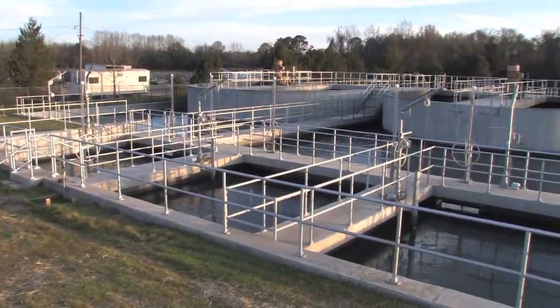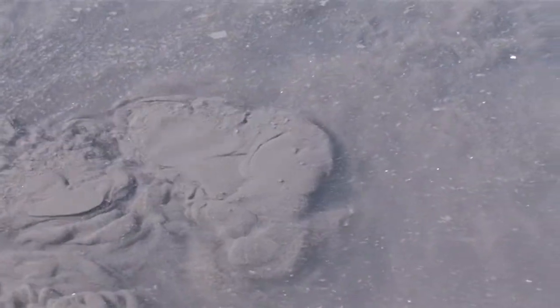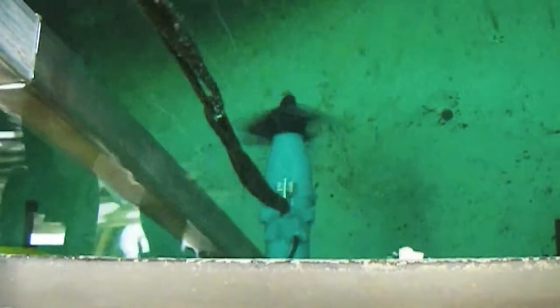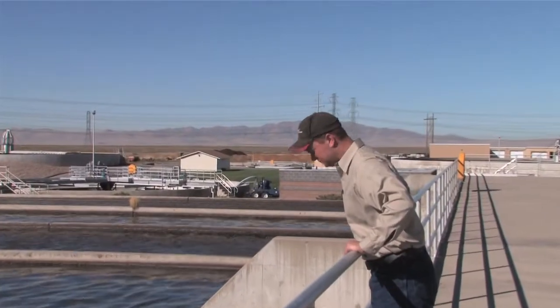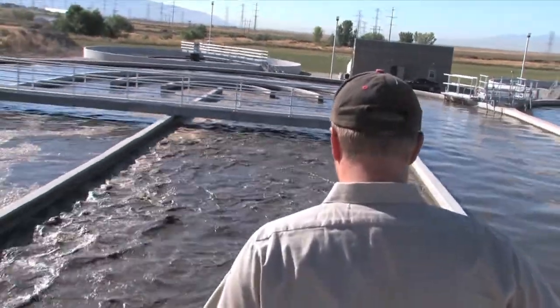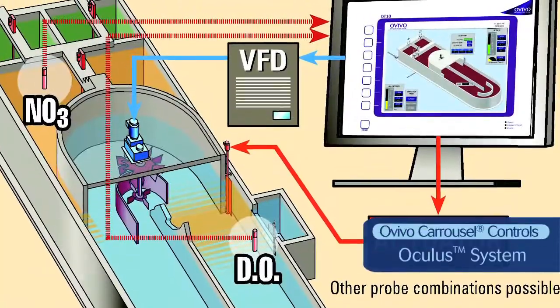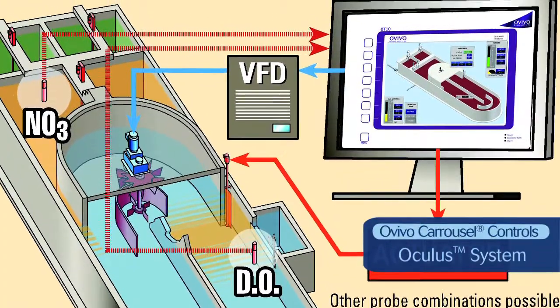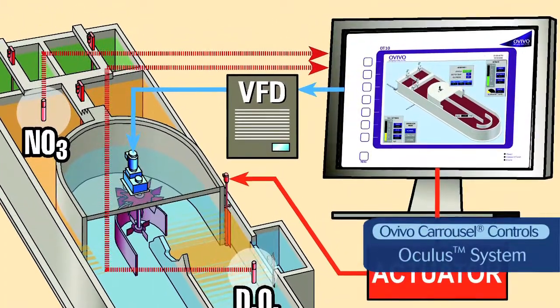OVIVO USA also offers a variety of highly efficient mixing solutions for anoxic and anaerobic zones. Whatever your process might be, it will definitely be improved by an effective control system. OVIVO's Oculus system is ideally suited for both aeration and optimized nutrient removal in any and all types of carousel systems.